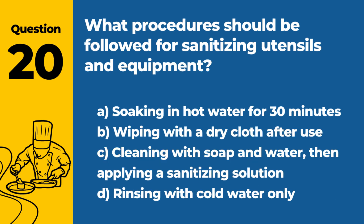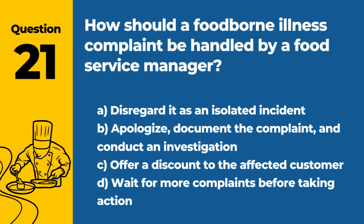Question 20: What procedures should be followed for sanitizing utensils and equipment? a. Soaking in hot water for 30 minutes. b. Wiping with a dry cloth after use. c. Cleaning with soap and water, then applying a sanitizing solution. d. Rinsing with cold water only. Answer: c. To properly sanitize utensils and equipment, they should first be cleaned with soap and water, followed by application of a sanitizing solution.